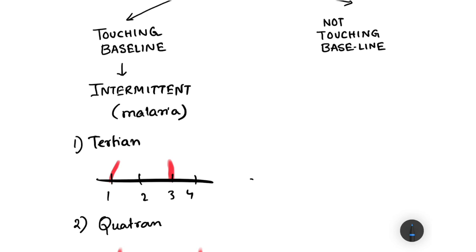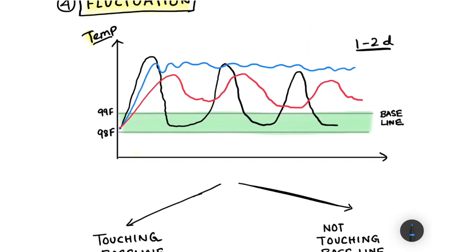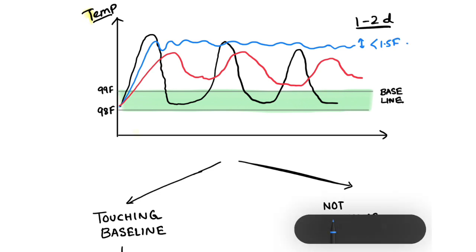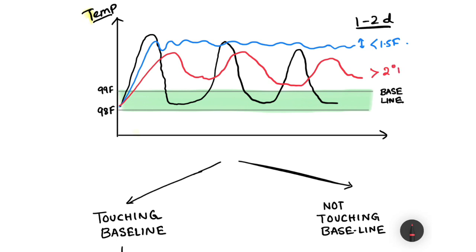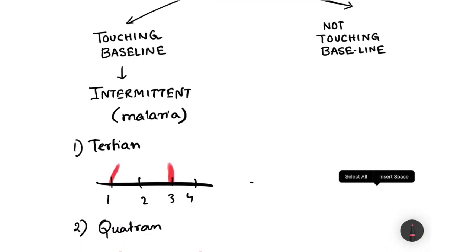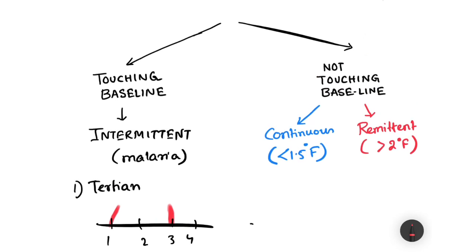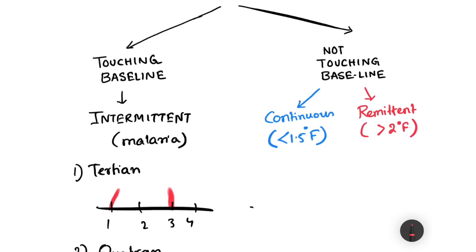For fevers not touching the baseline, there are two more types. Continuous fever has temperature fluctuation less than 1.5°F — seen in pneumococcal pneumonia, meningitis, and miliary tuberculosis. Remittent fever has temperature fluctuation of more than 2°F — seen in UTI and amoebic liver abscess.